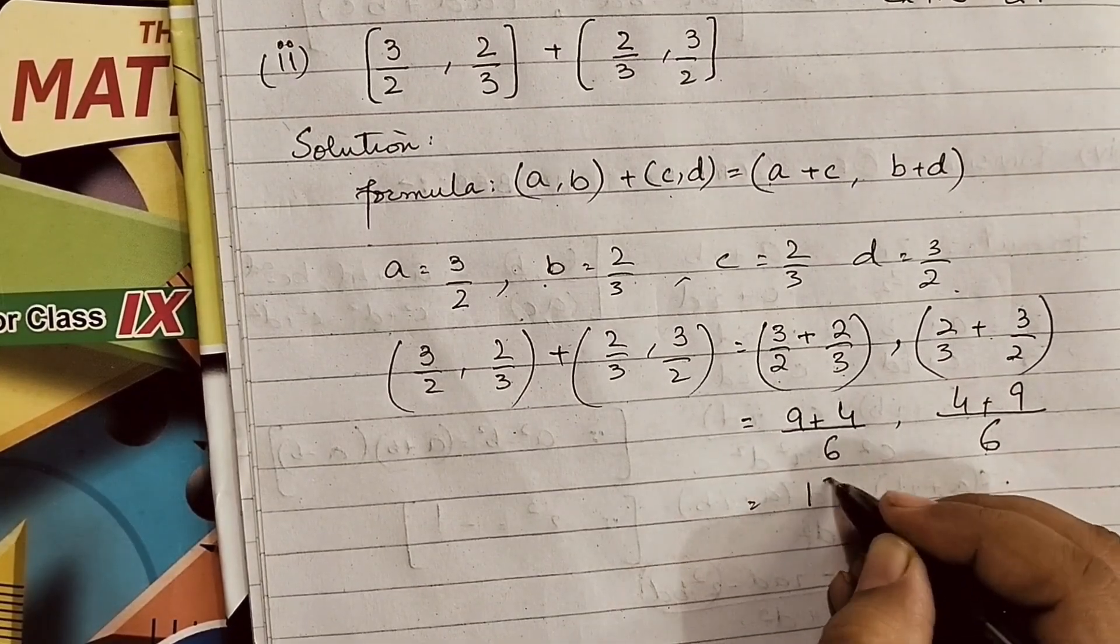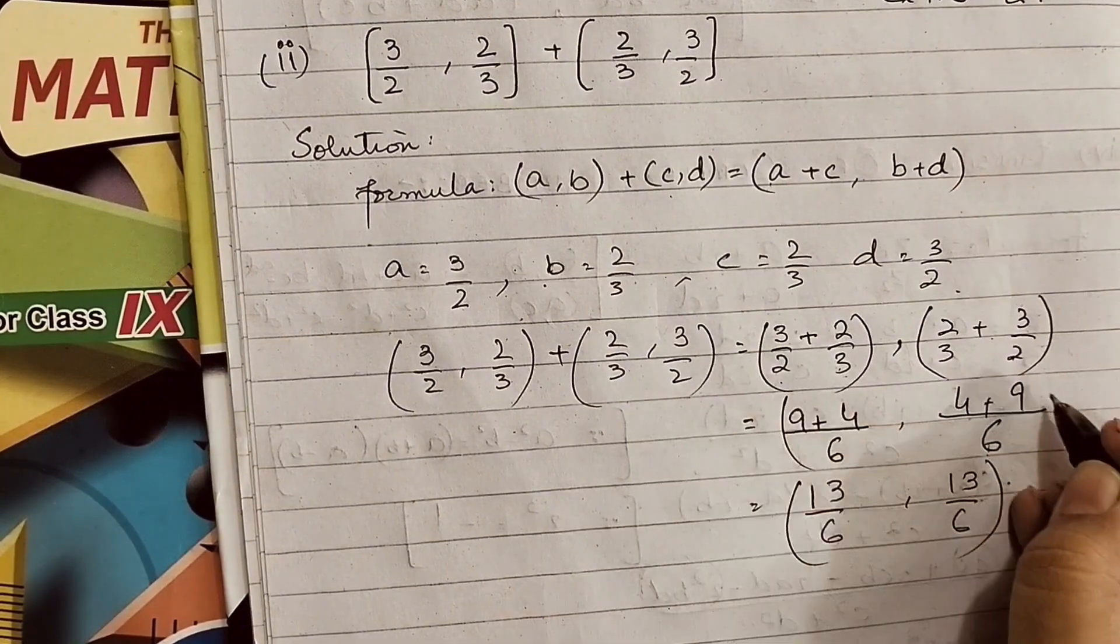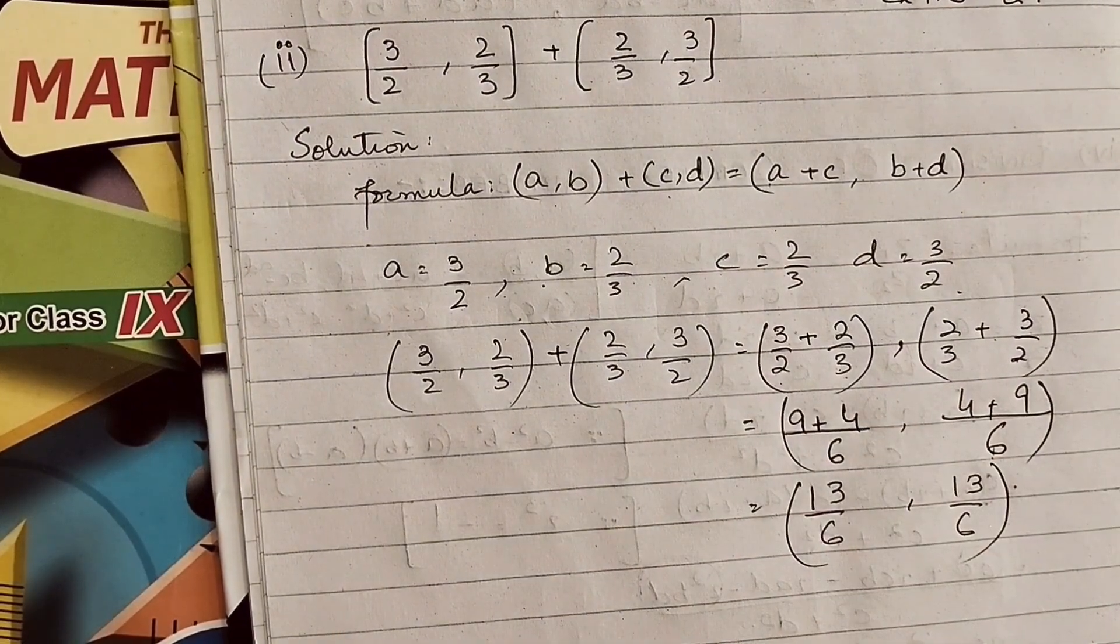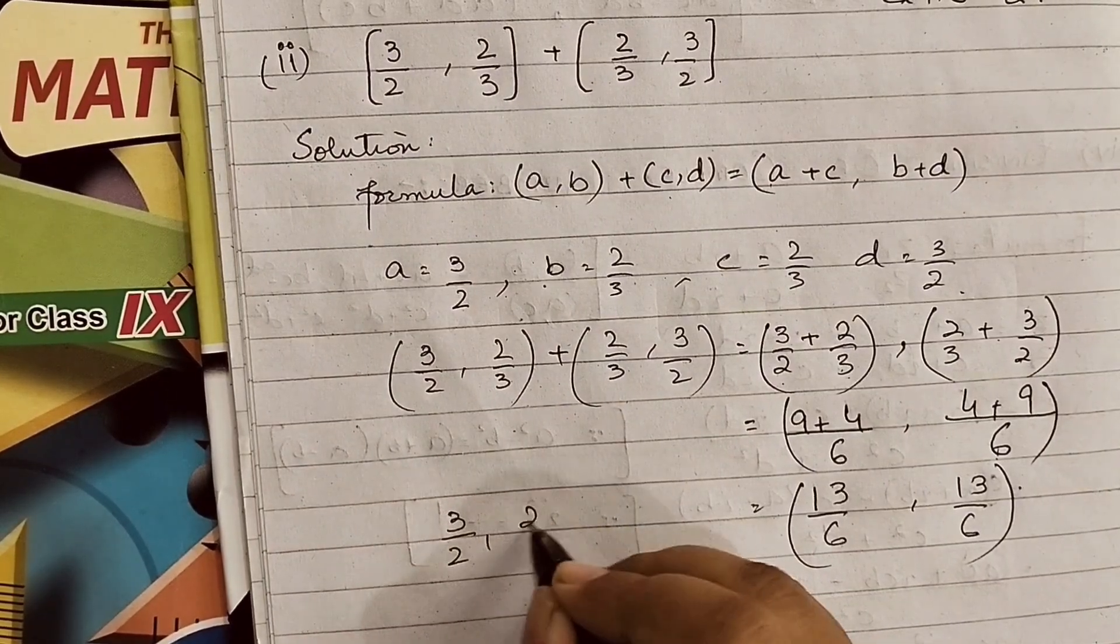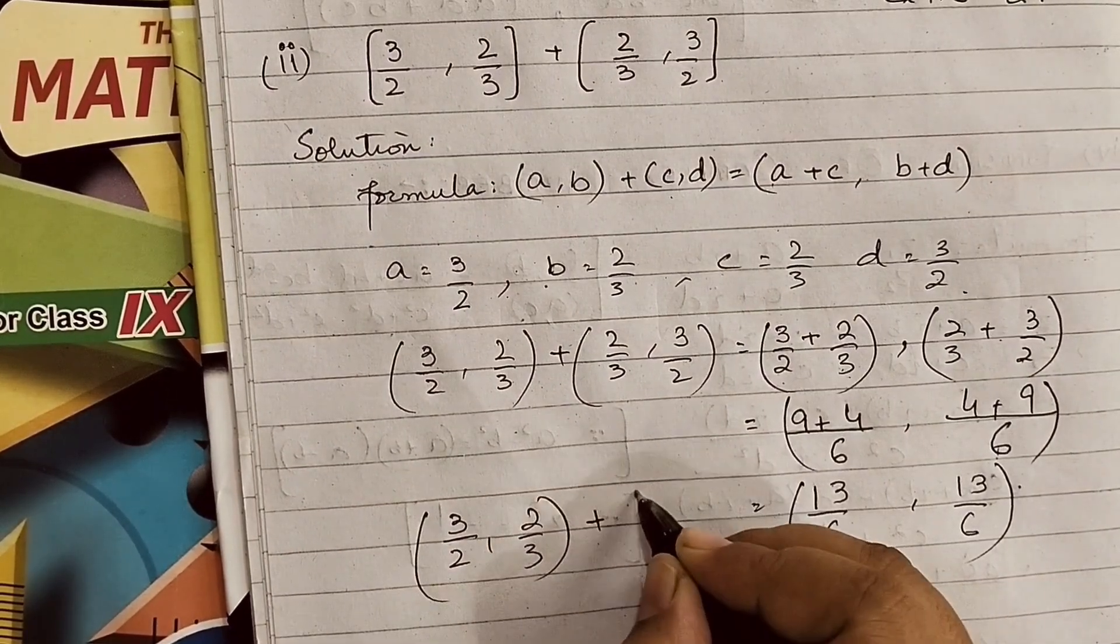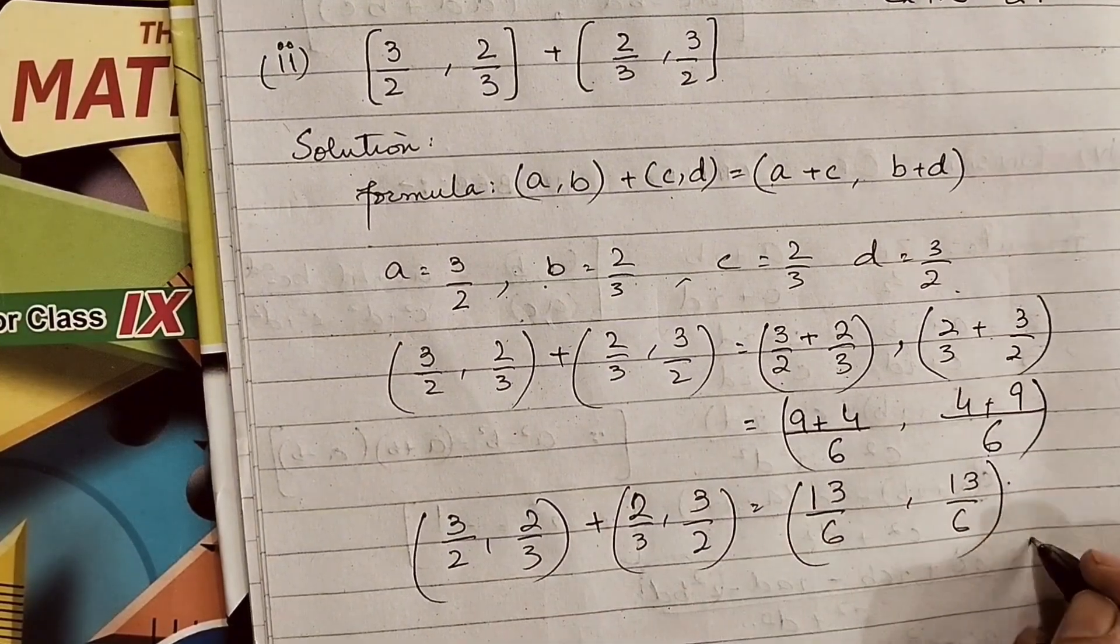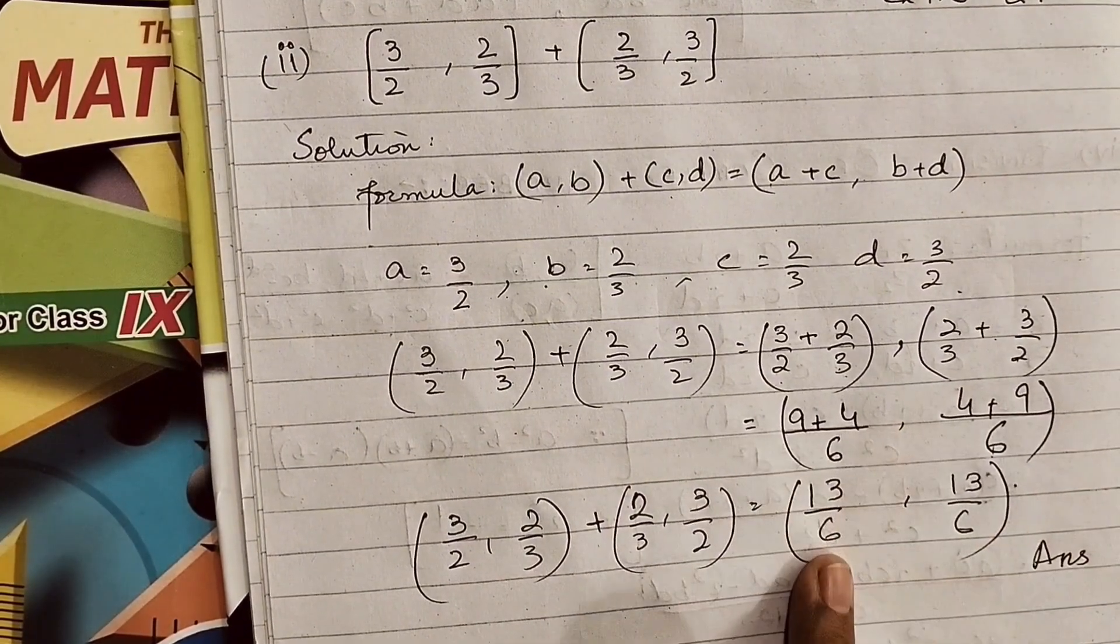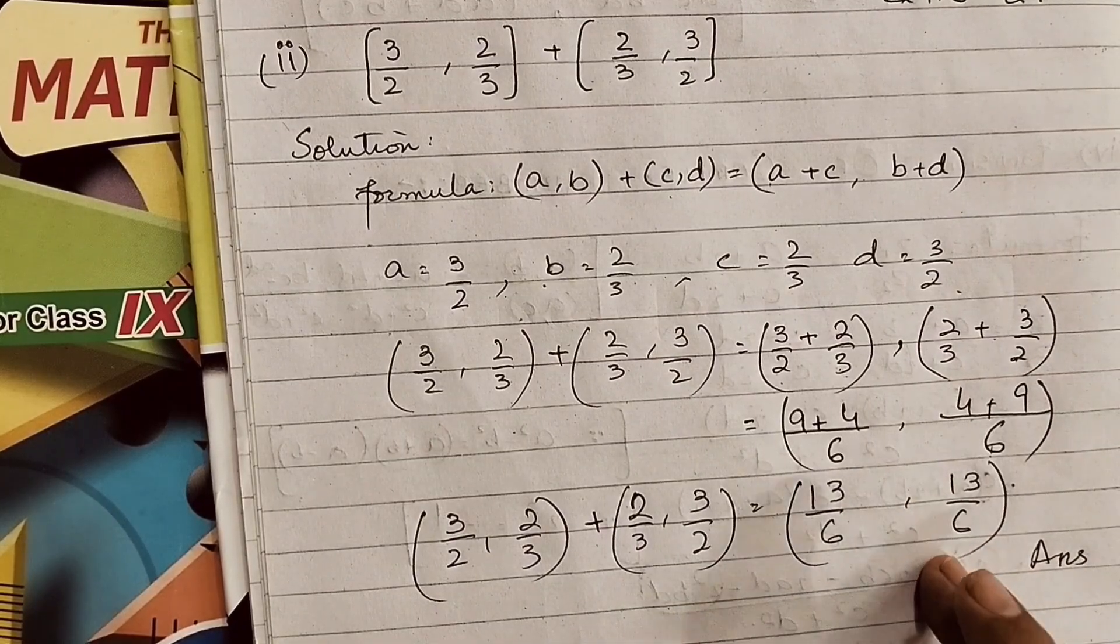9 plus 4 is 13 upon 6 and 13 upon 6. Our new complex number after adding them becomes (13/6, 13/6). So (3/2, 2/3) add (2/3, 3/2) equals (13/6, 13/6). Here 13/6 is the real part and this is the imaginary part, which are both equal.